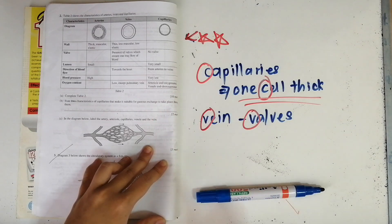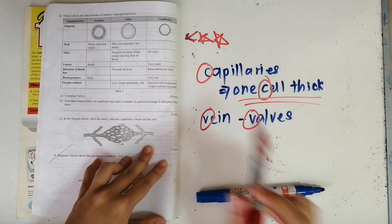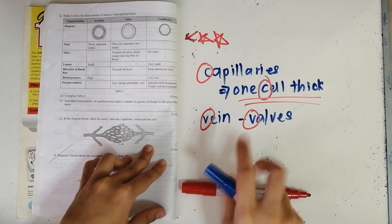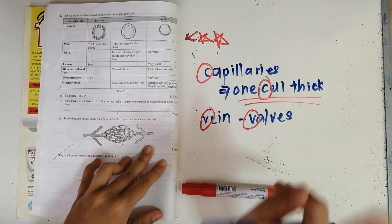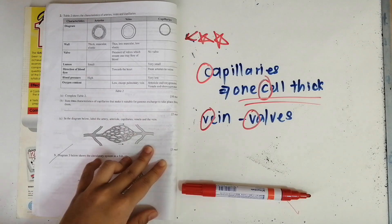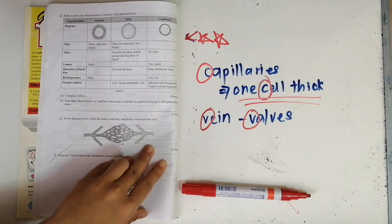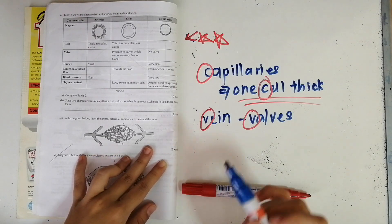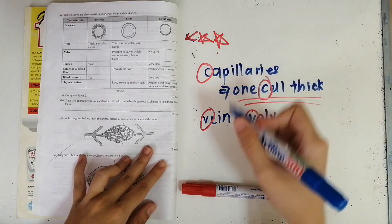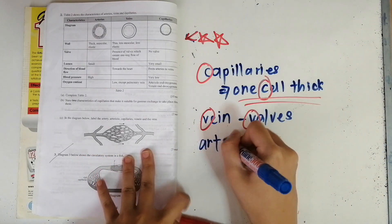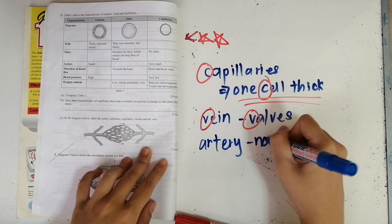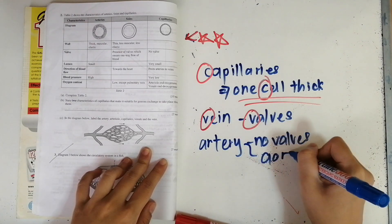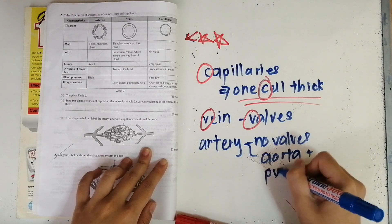Now for arteries — in arteries there are usually no valves, except for two. The two exceptions both start with A: the aorta and the pulmonary artery. So in arteries there are no valves except for the aorta and pulmonary artery.